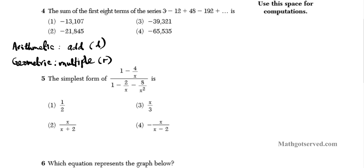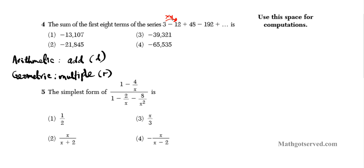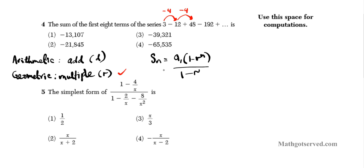Let's try multiplication. What do you multiply 3 by to get negative 12? You multiply by negative 4, because the sign also changes. To go from the first to the second term you multiply by negative 4. And from the second to the third: negative 12 times negative 4 equals 48 — absolutely. So this is a geometric series. The formula for the sum of a geometric series — which you can refer to on your reference sheet — is a₁ times (1 minus r to the n) divided by (1 minus r).